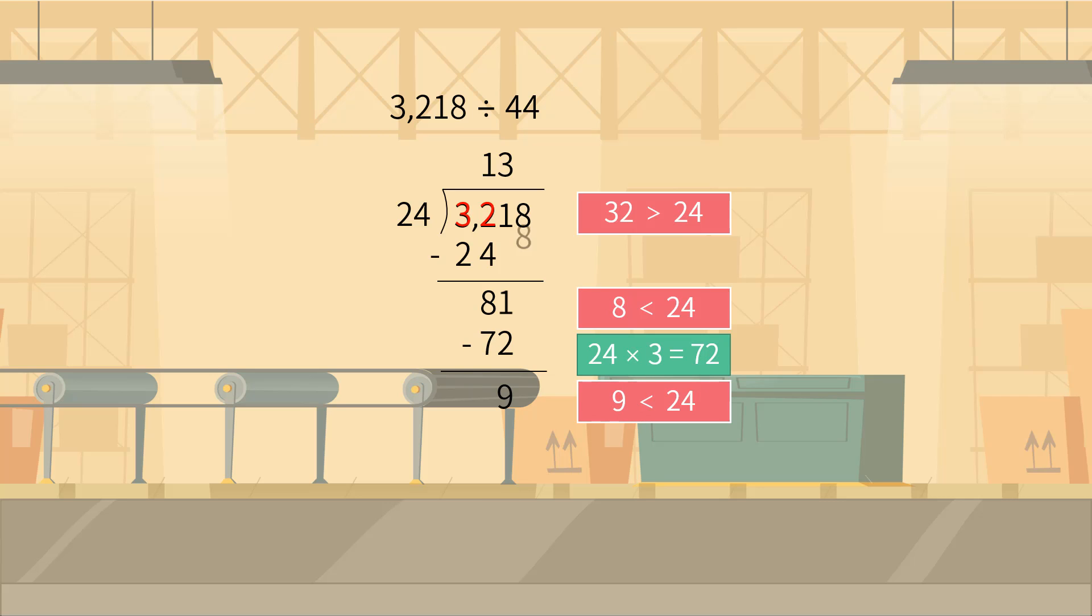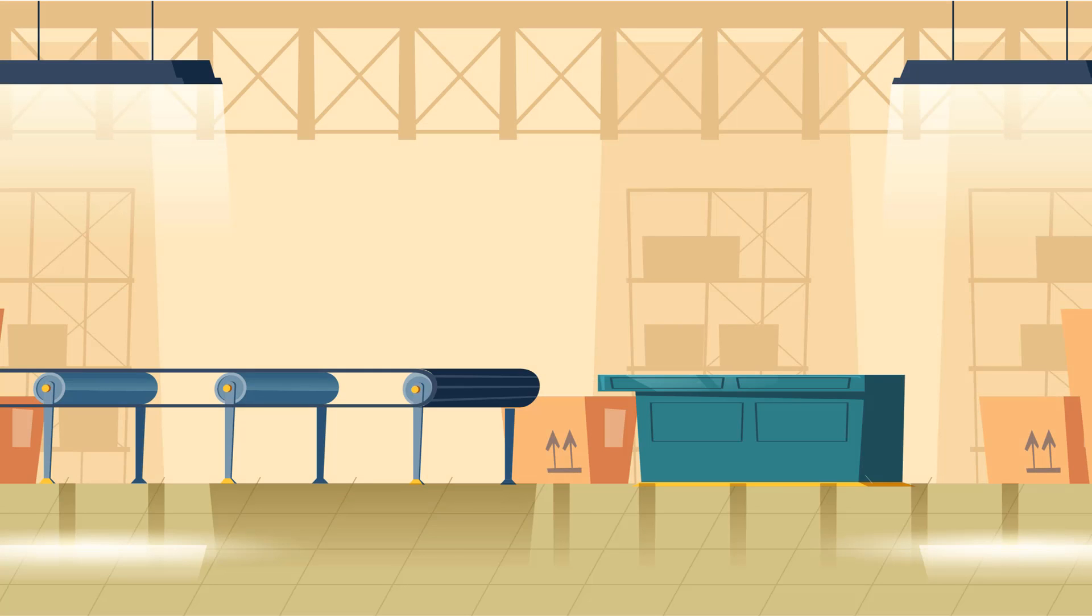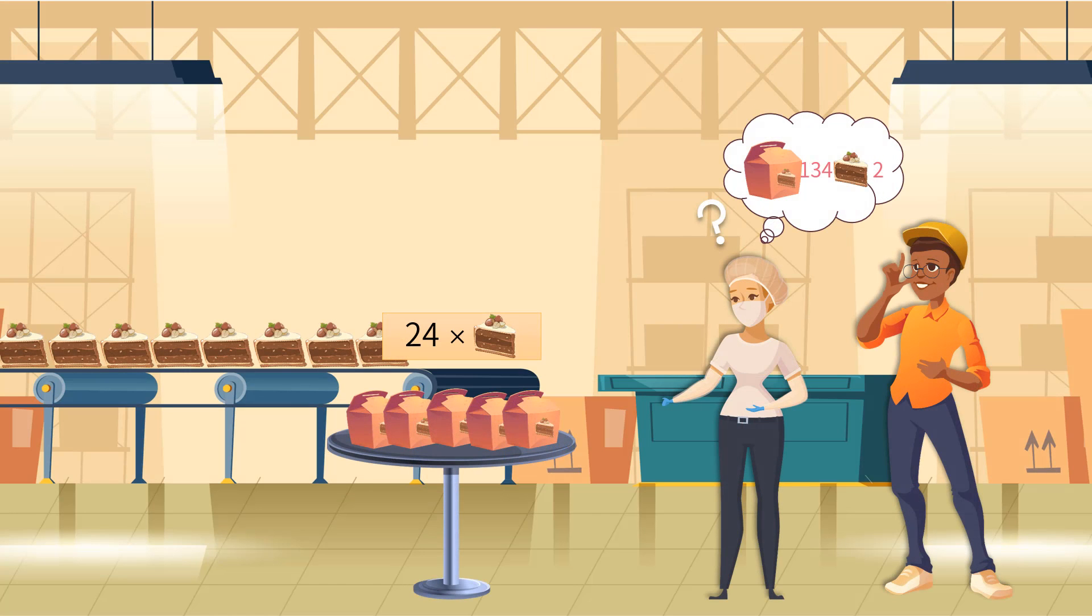Finally, we find the quotient is 134 with the remainder 2. We found 134 boxes of cakes were packed, with 2 cakes remaining.